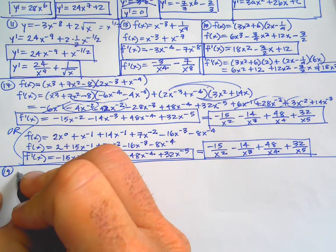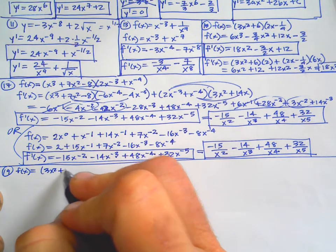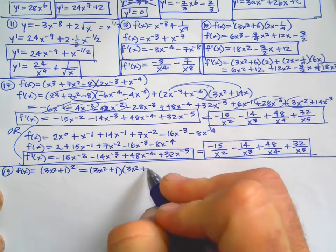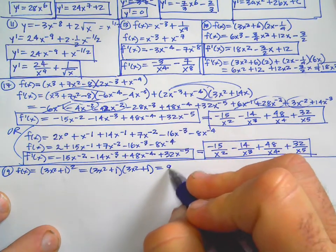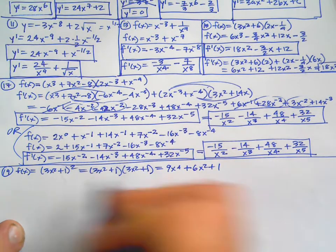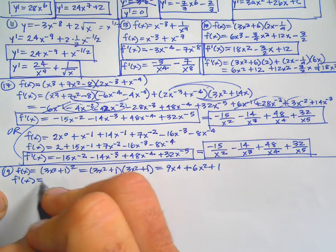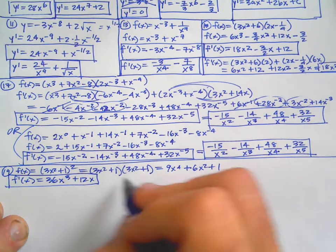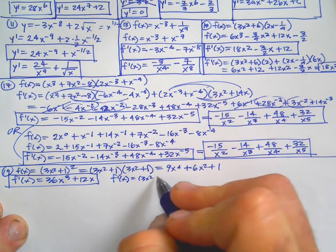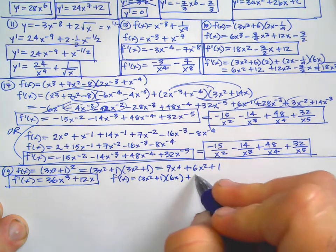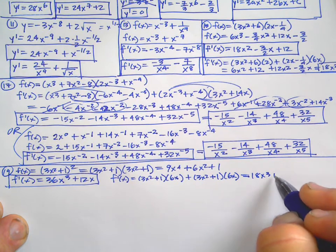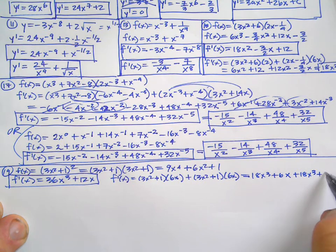Number 19: f(x) equals (3x squared plus 1) squared, which is (3x squared plus 1)(3x squared plus 1). Distribute it out to get 9x to the 4th plus 6x squared plus 1. The derivative is 36x cubed plus 12x. You could also do product rule: first times derivative of second plus second times derivative of first, giving 18x cubed plus 6x plus 18x cubed plus 6x, which is 36x cubed plus 12x — same answer.